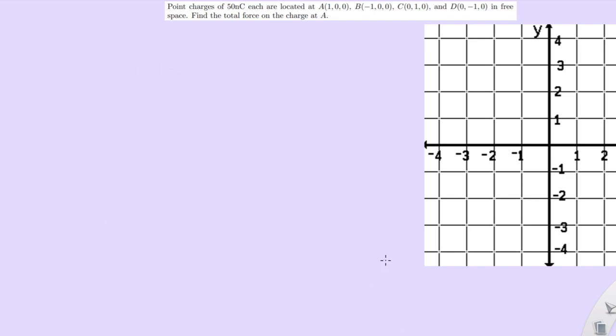Alright, so we have four charges of a known charge, 50 nanocoulombs, right? And we want to find out what three of these charges are going to do to this fourth charge, A, right here. It's basically what the question is. So let's start drawing this out.